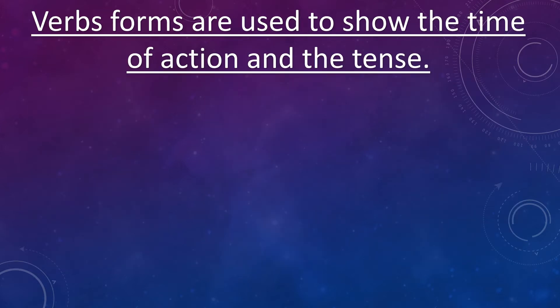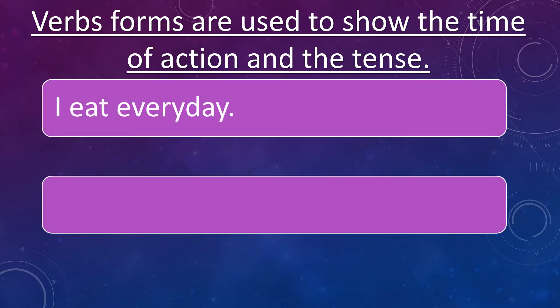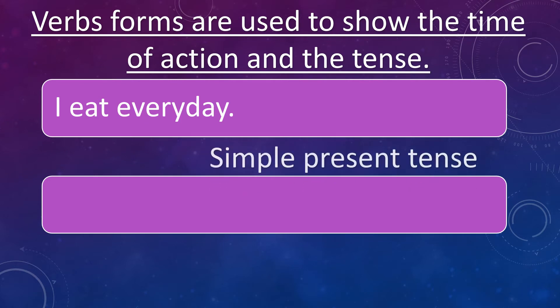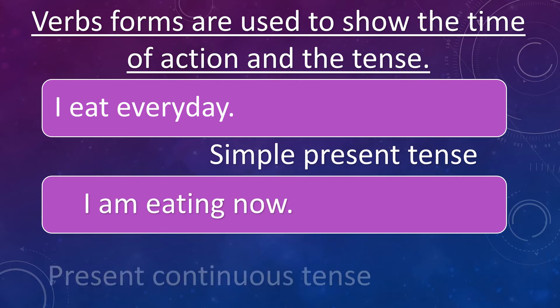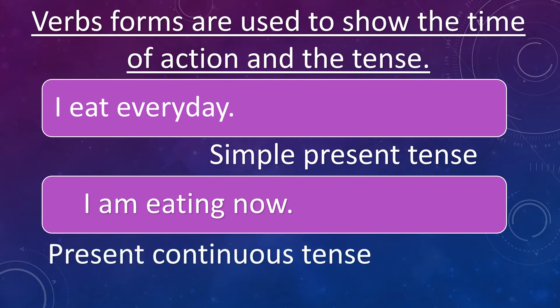Verb forms are used to show the time of action and the tense. Example: 'I eat every day' — simple present tense. 'I am eating now' — present continuous tense.